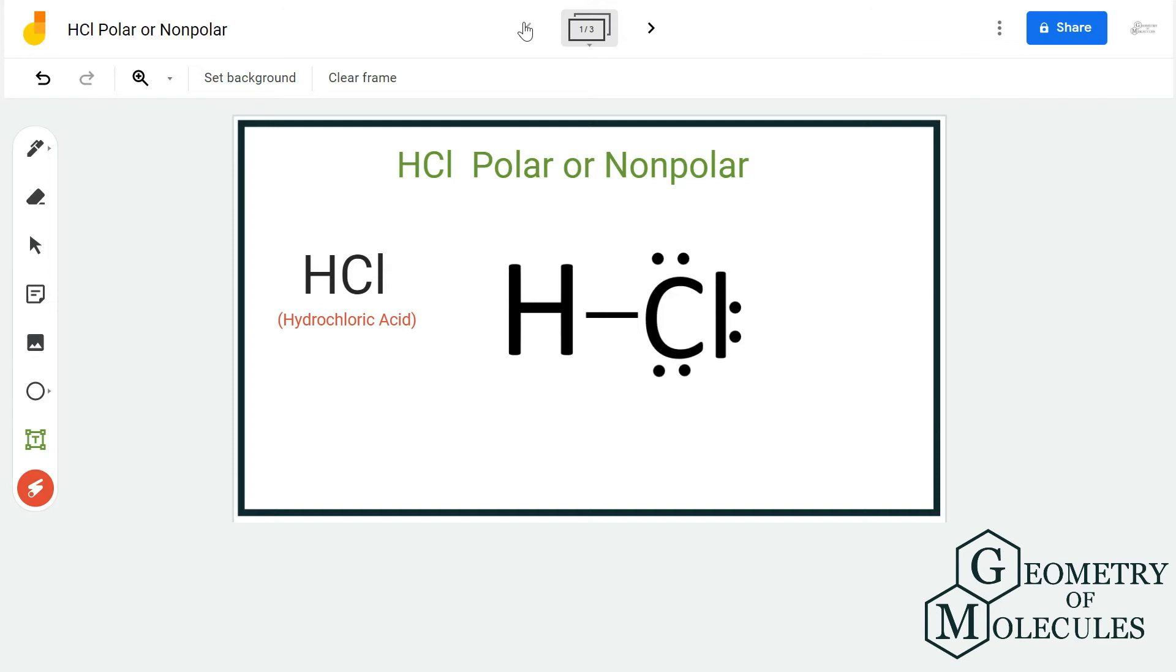Hi guys, today in this video we are going to find out the polarity for HCl molecule, the chemical formula for hydrochloric acid. It is made up of one atom of hydrogen and chlorine.